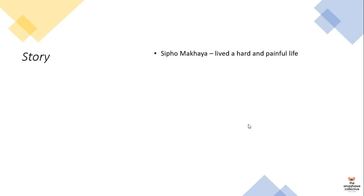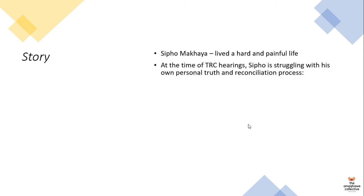In terms of the story, Nothing But The Truth is basically focused around Sipo Makaya, an older man. He's a librarian in New Brighton and he lived a hard and painful life. At the time of the TRC hearings, Sipo is struggling with his own personal truth and his reconciliation process. He has conflict with his brother Temba, who is deceased, and also with Mandisa and his own daughter Tando. So the conflict that he has is within himself, with his family, with his past, and with his present situation in the new democratic South Africa.